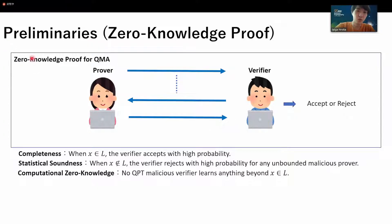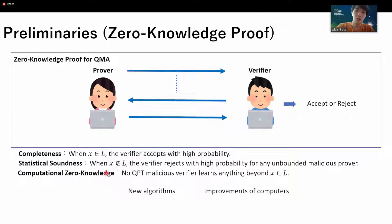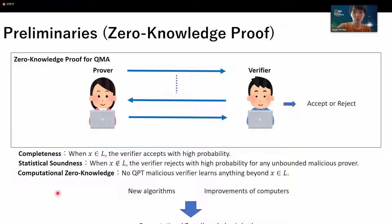Although zero-knowledge proof for QMA satisfies these three properties, computational zero-knowledge has a risk. In fact, new algorithms or improvements of computers may solve the problem underlying the security of computational zero-knowledge. So computational zero-knowledge does not necessarily guarantee long-term security.